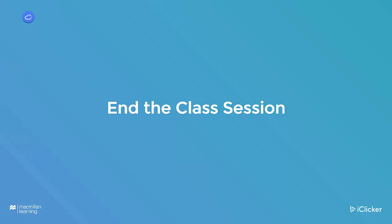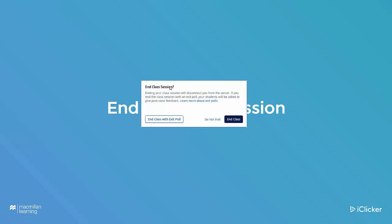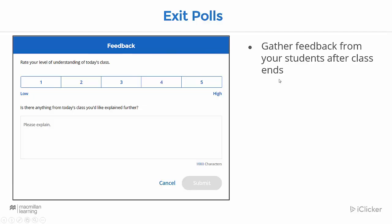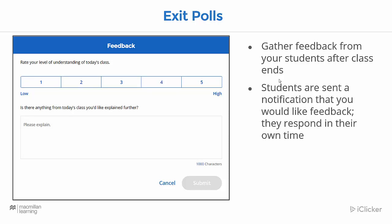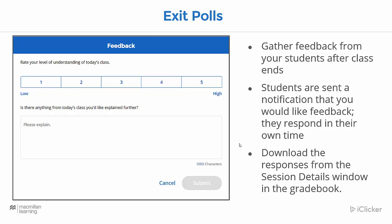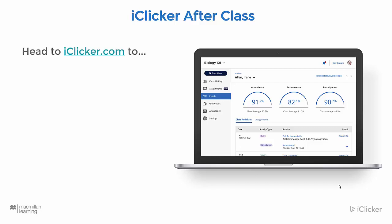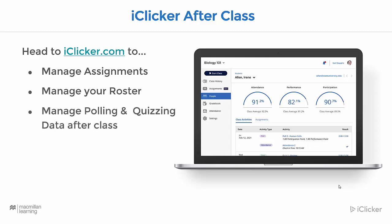Lastly, you have some options when it's time to end your class session. When you go to end your class session, you'll X out and be asked if you want to end your class with an exit poll. Exit polls are designed to gather feedback from your students after class ends. Students are sent a notification that you would like feedback, and they respond in their own time. You can download the responses from the session details window in the gradebook. Now you're ready to learn the steps you need to take with iClicker after class. After class, you'll want to head to iClicker.com to manage assignments, manage your roster, manage polling and quizzing data, manage attendance data, and transfer grades.